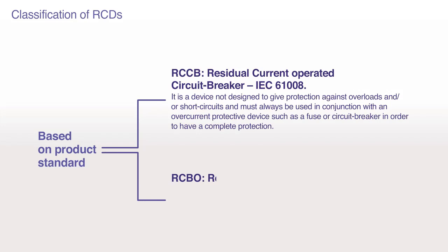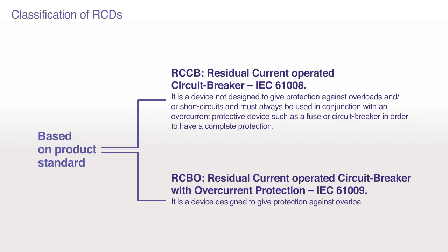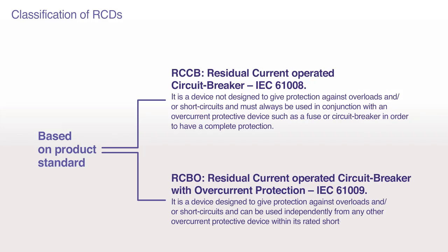RCBO — Residual Current Operated Circuit Breaker with Overcurrent Protection, IEC 61009. It is a device designed to give protection against overloads and/or short circuits and can be used independently from any other overcurrent protective device within its rated short circuit capacity.